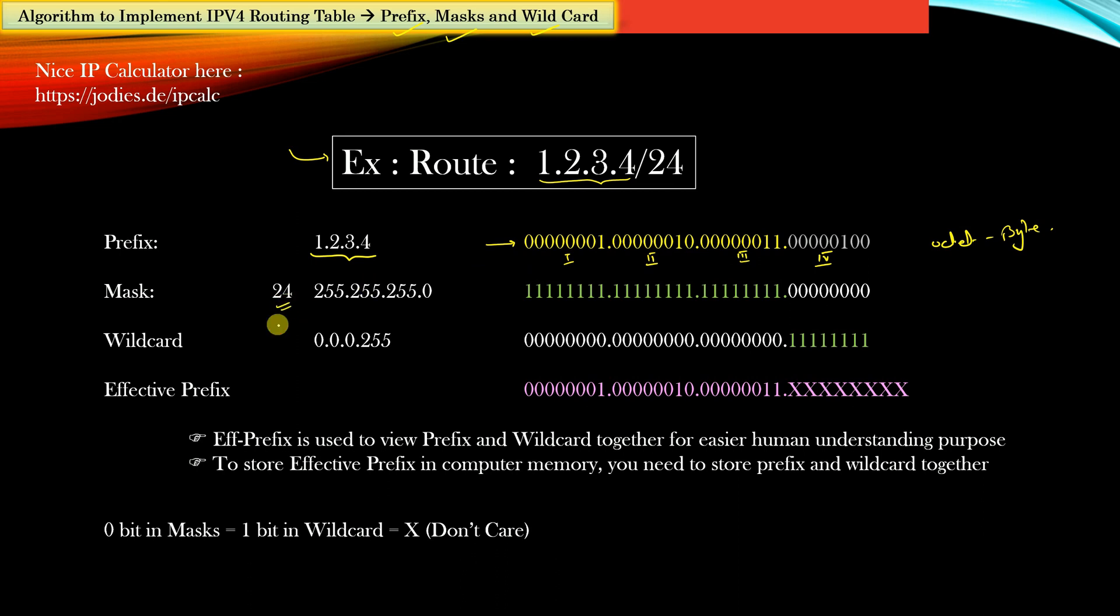Then mask is the 24. In dotted decimal or CIDR notation we express the mask as 255.255.255.0. So this 24 actually means that the first 24 bits in the binary representation of the mask is 1 whereas the last 8 bits are going to be 0.